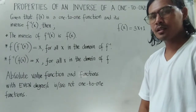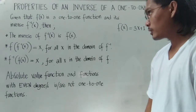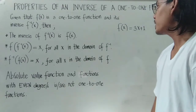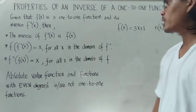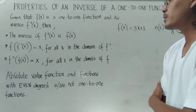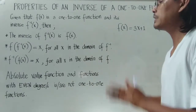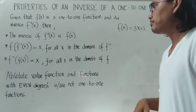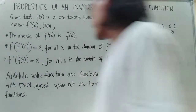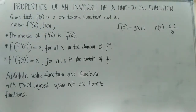Welcome to our channel Wrong Basic. This time we will learn about the properties of an inverse of a one-to-one function. We will utilize these properties to prove the inverse, and determine if a function has an inverse or not. Given that f of x is a one-to-one function and its inverse is denoted by the inverse of f of x.